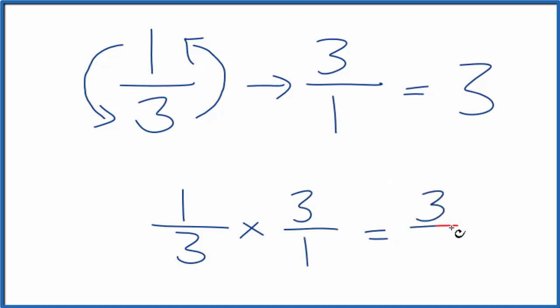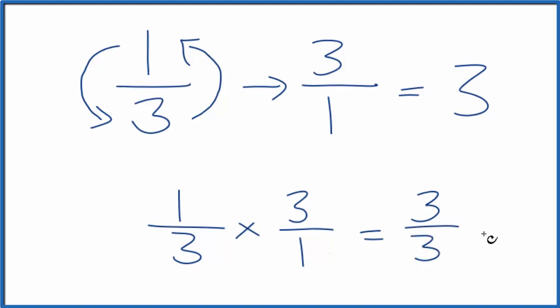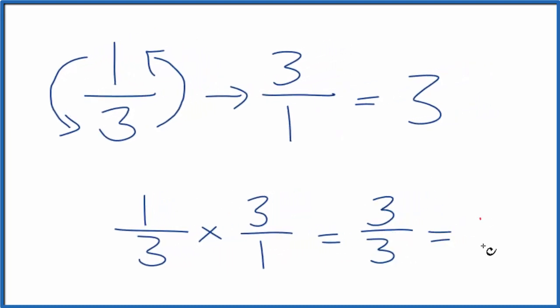1 times 3, that's 3. 3 times 1 is 3. And 3 divided by 3, that's 1.